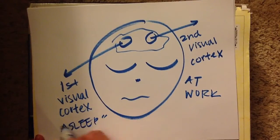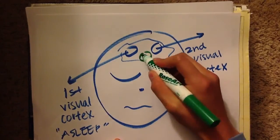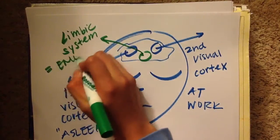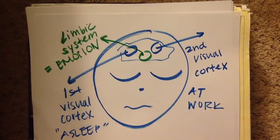The limbic system in the brain is also working full-time, which is why many of our dreams are really sad, scary, happy, or emotionally charged in another way, as the limbic system is the emotion center in our body.